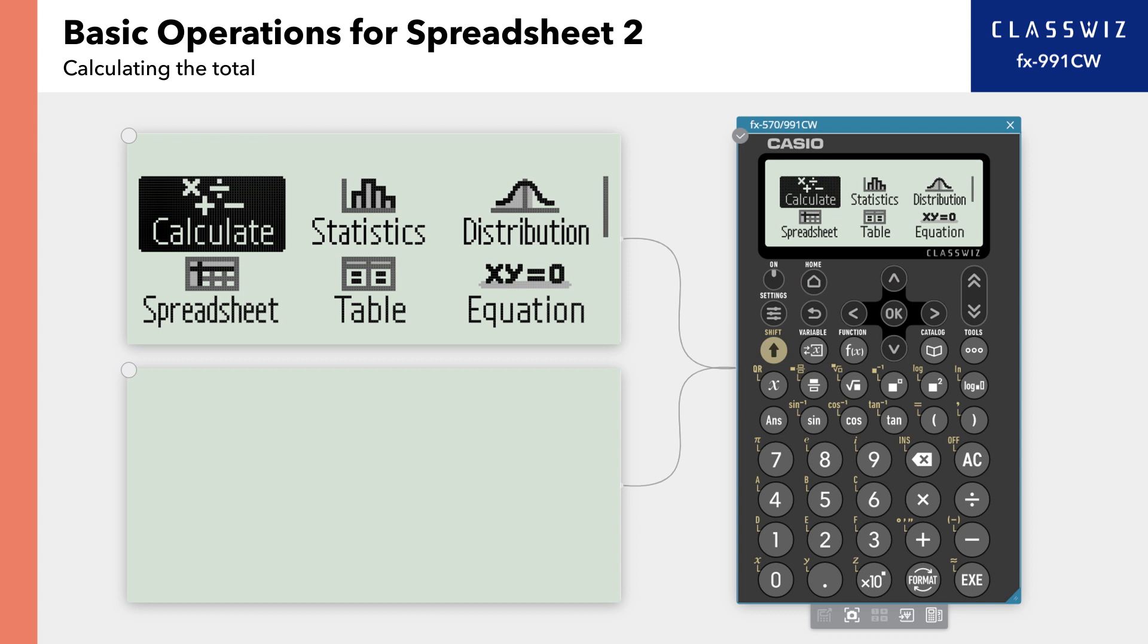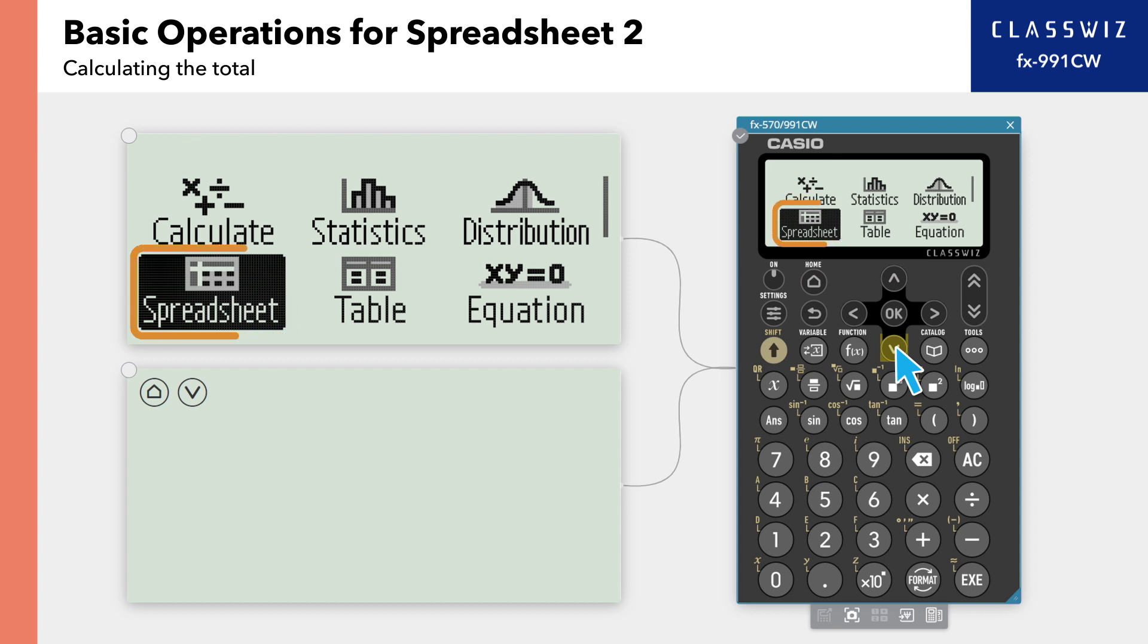First, let's calculate the total value. Press Home, then select Spreadsheet.